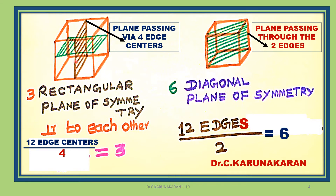Consider the mirror plane shown in brown or green color. The rectangular plane of symmetry passes through four edge centers. There are 12 edge centers in total, and each plane passes through four of them, giving 12 divided by 4 equals three rectangular planes of symmetry.